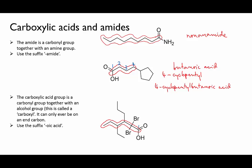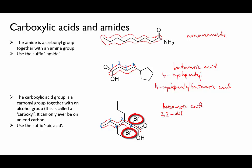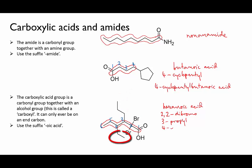With the preferred chain selected, the main chain is hexanoic acid, and it has two bromo substituents on carbon number two, a propyl on carbon number three, and an ethyl on carbon number four. Assembling that alphabetically, we get 2,2-dibromo-4-ethyl-3-propylhexanoic acid.